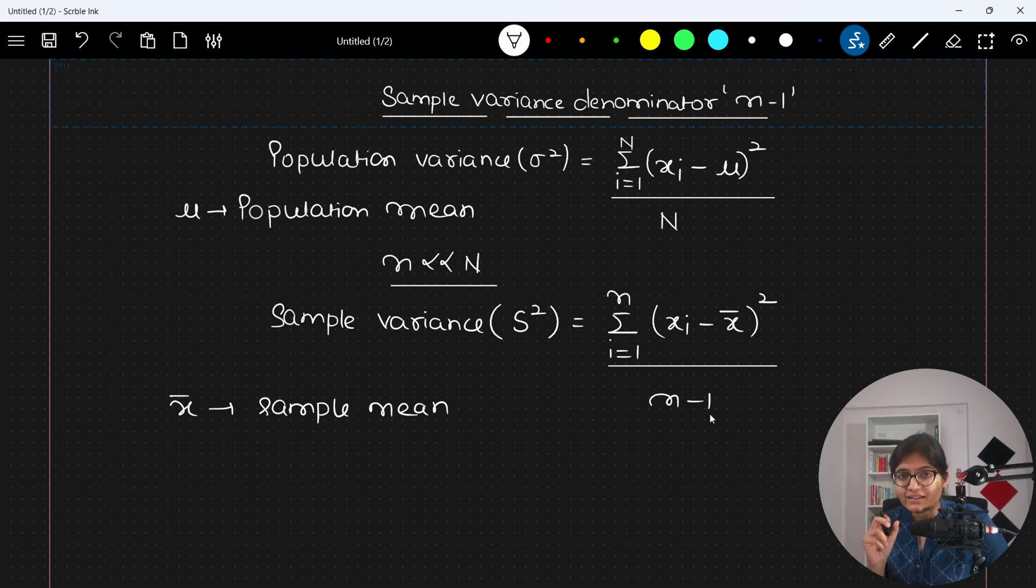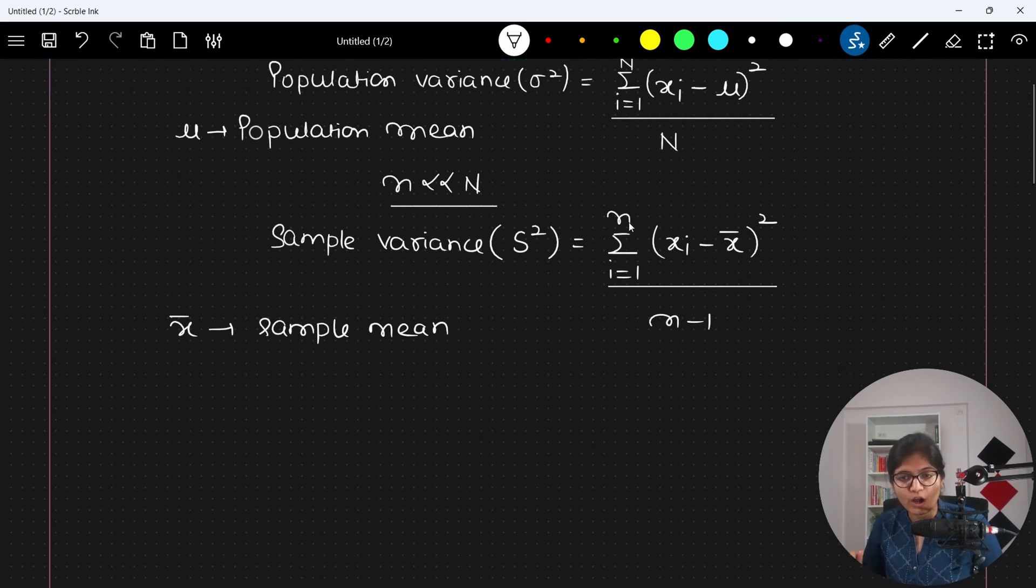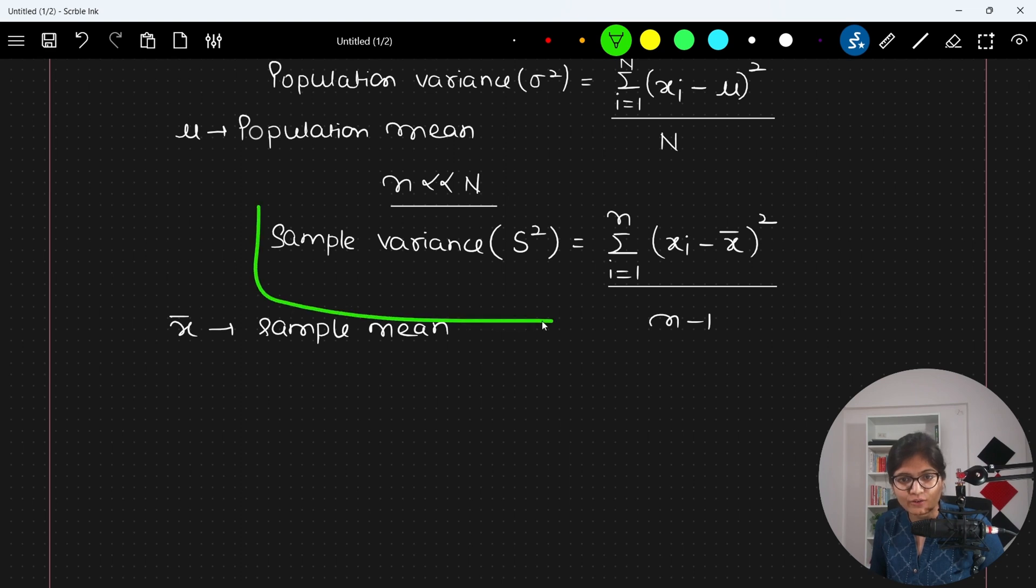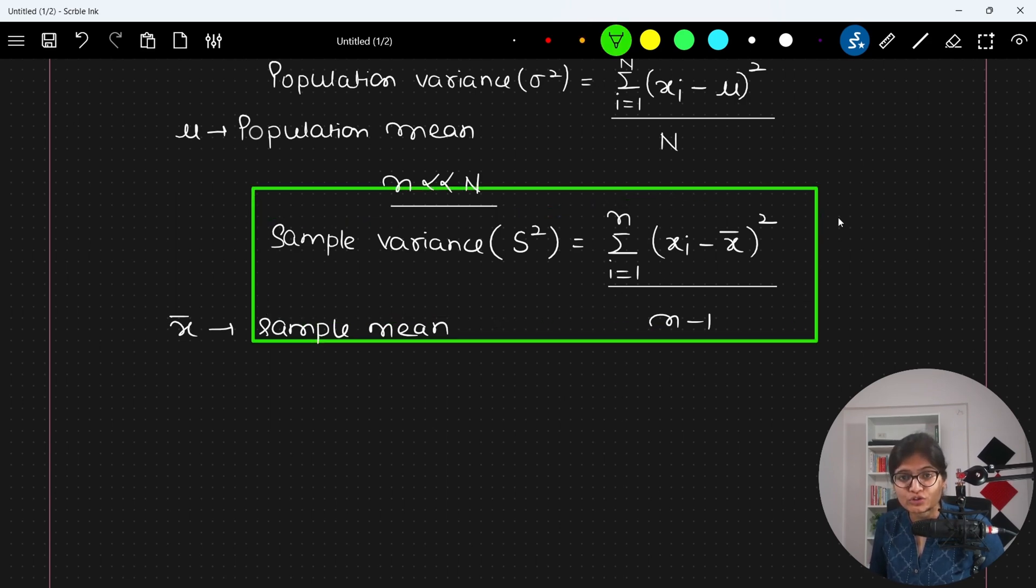I will get a sample variance value higher as comparable to when I will be having a denominator as N. If you will observe this sample variance formula which we are calculating, you can see this N minus 1 is somehow indirectly proportional to each other.